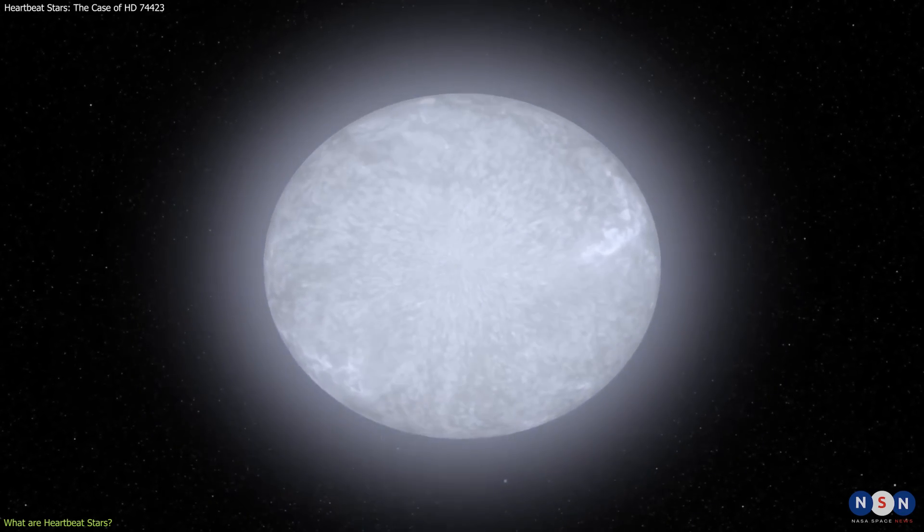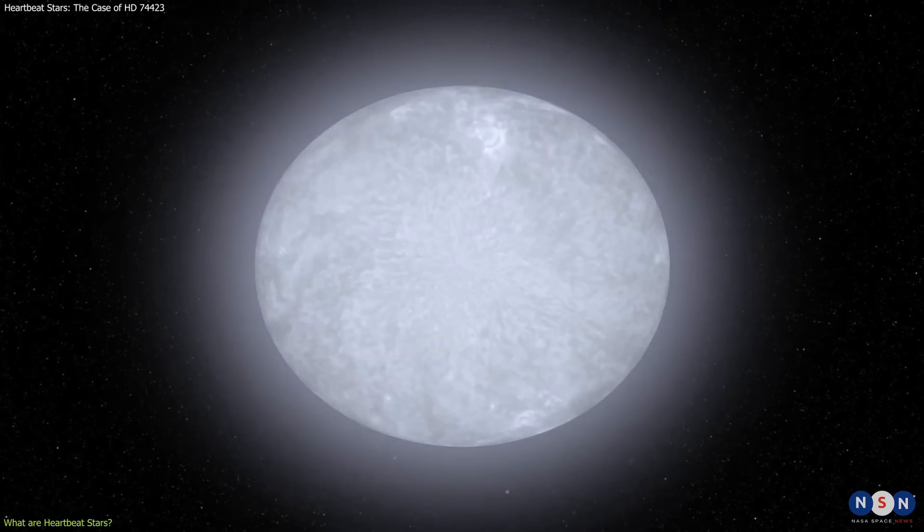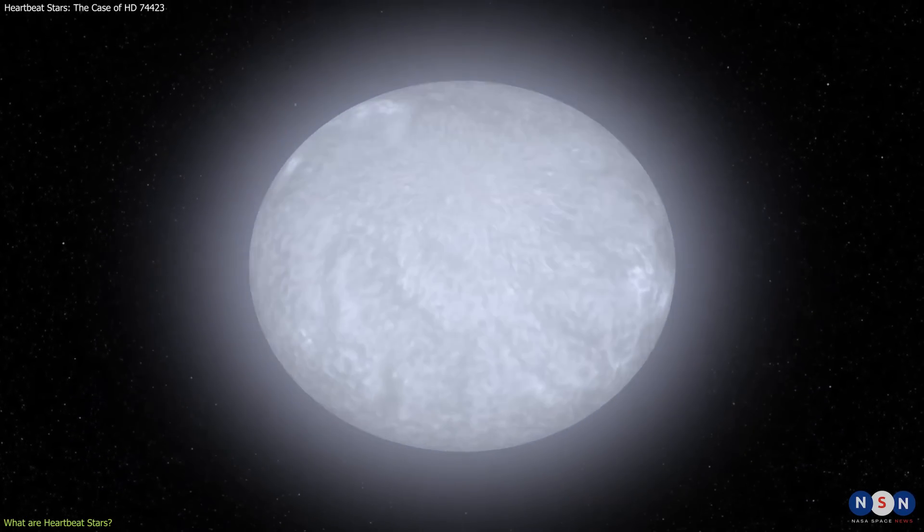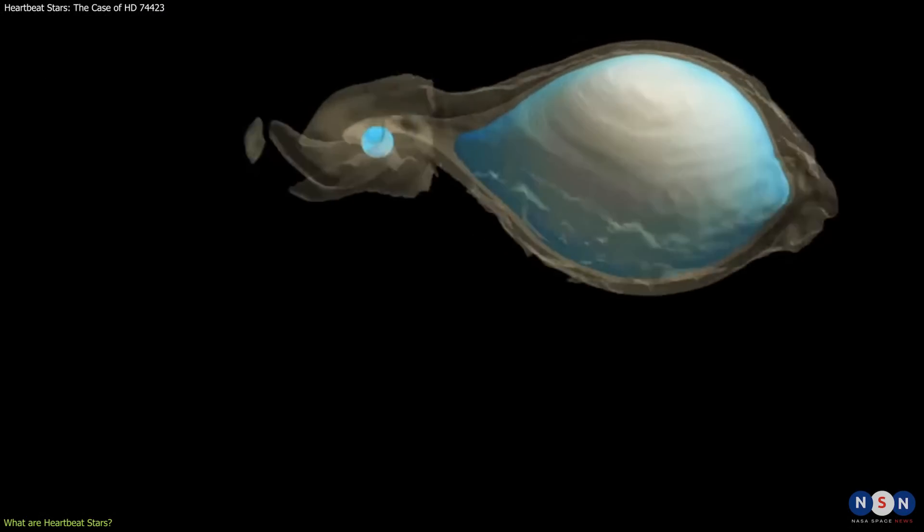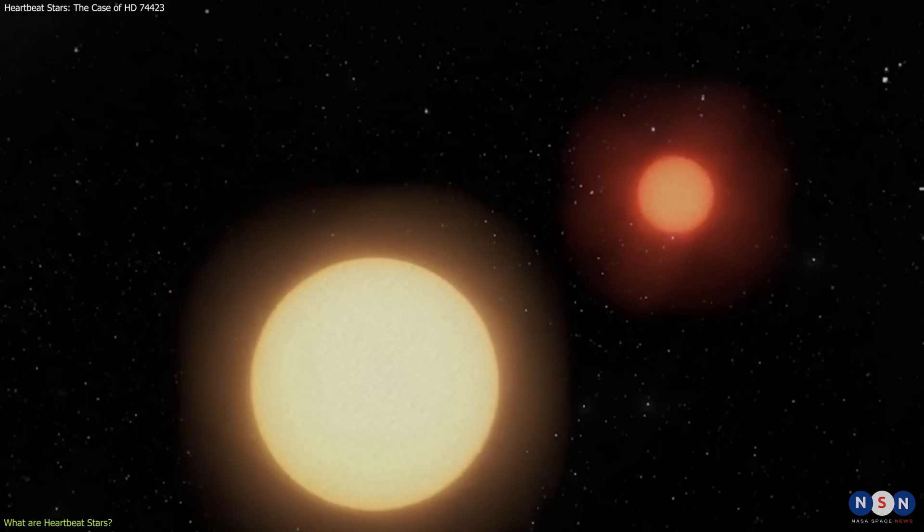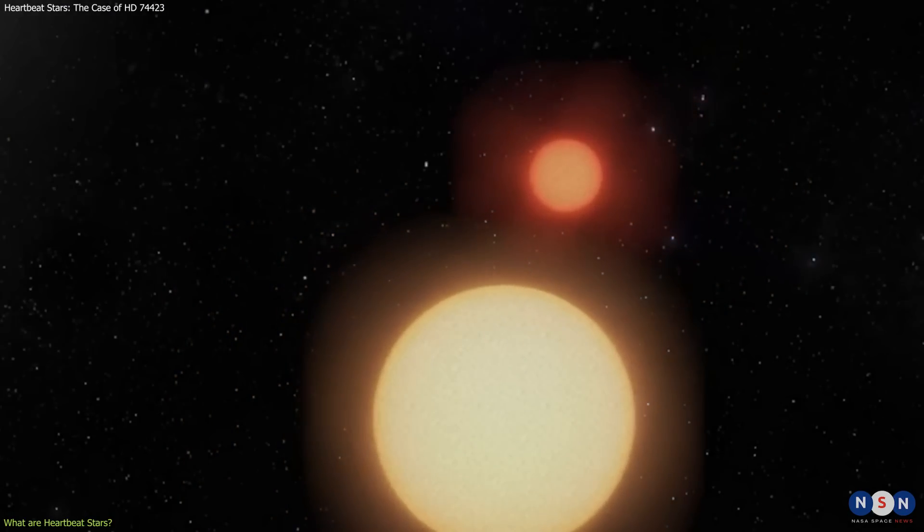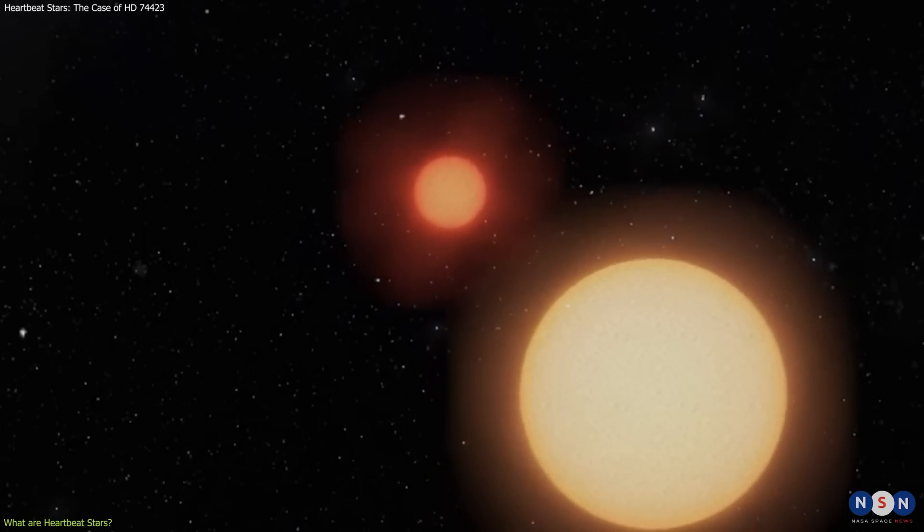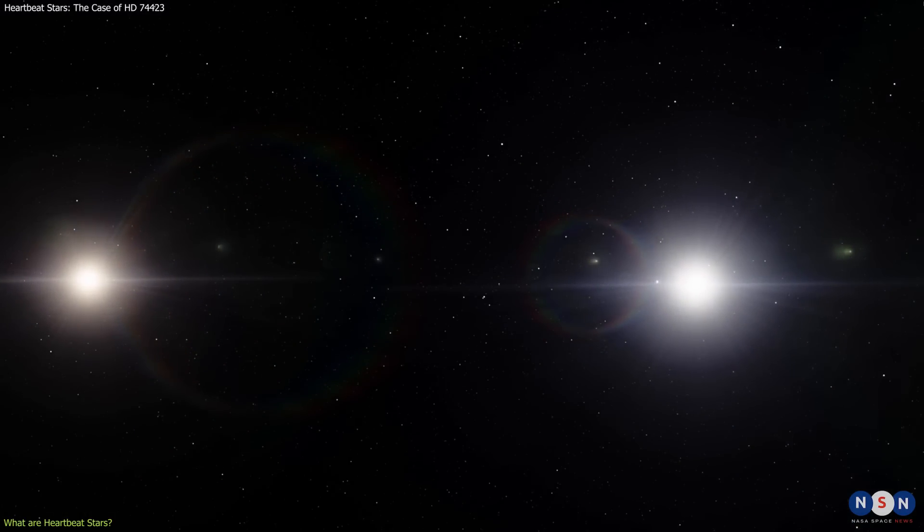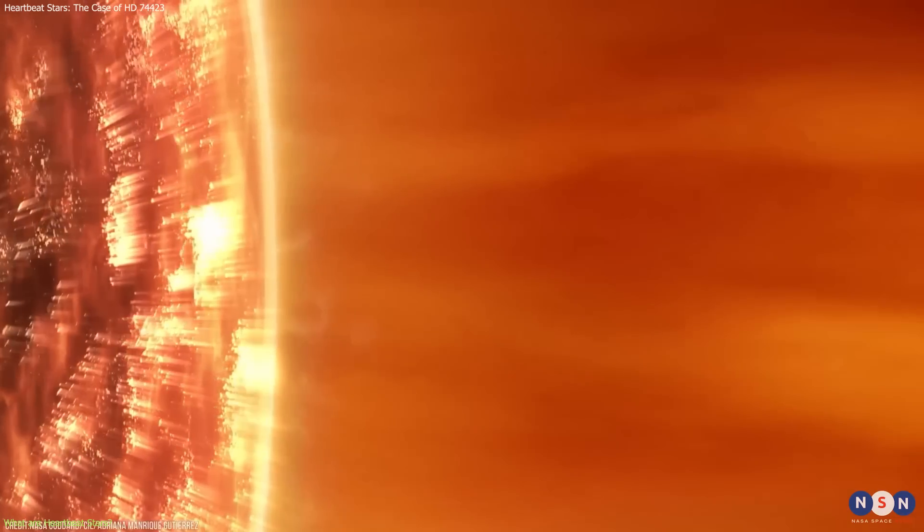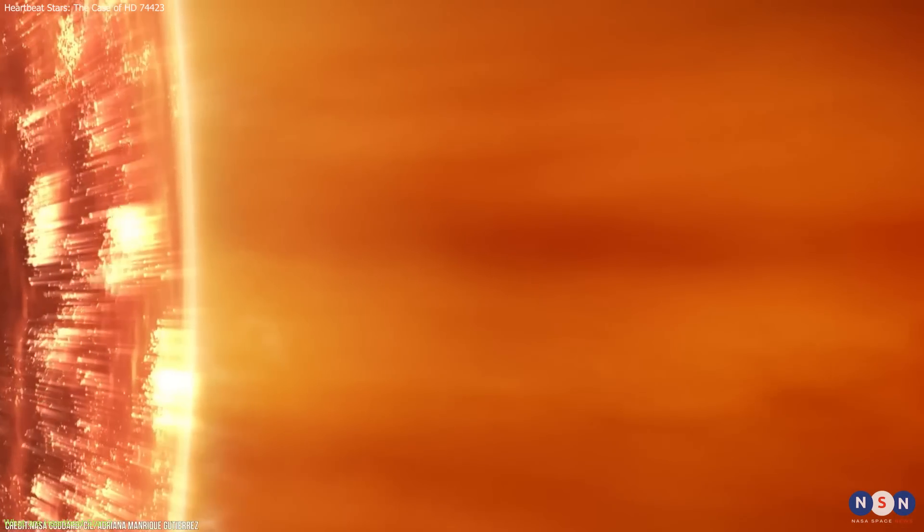Heartbeat stars are fascinating and challenging for astronomers because they can reveal a lot of information about the physics and evolution of stars. By studying how they change their shape and brightness, we can learn about their internal structure, their rotation, their magnetic fields, their chemical composition, and their age. We can also learn about how they interact with each other in binary systems, and how they affect their surroundings with their powerful waves and radiation.